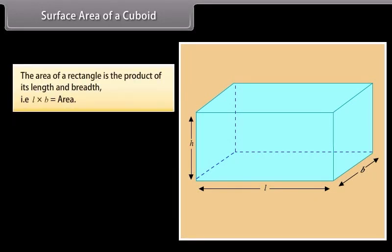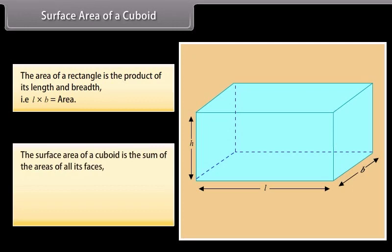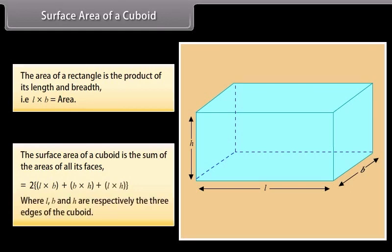We already know that the area of a rectangle is the product of its length and breadth, that is L × B = area. Therefore, the surface area of a cuboid is the sum of the areas of all its faces, which is equal to 2(lb + bh + lh), where L, B, and H are respectively the three edges of the cuboid.